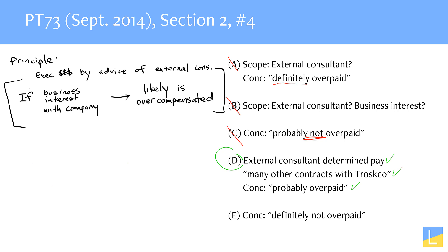Answer choice E is something we should also be able to get rid of just from the very first two lines because it says 'not overpaid' as the conclusion. But all we can conclude is that someone is overpaid. The biggest takeaway from this problem is how quickly we should be able to get rid of answer choices C and E because they are both trying to say that someone is not overpaid as the conclusion, when all we can conclude is that someone is overcompensated.